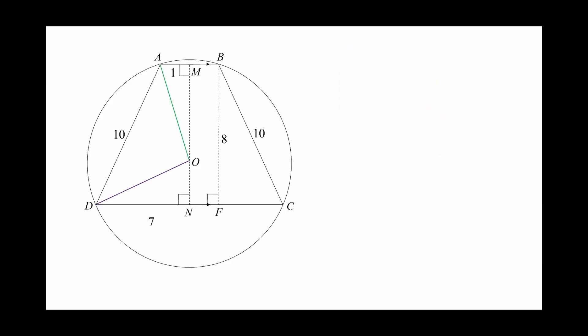What else can we do? Let's construct the two radii OA and OD. Let the length be R. We also let OM be K, so ON is equal to 8 minus K.